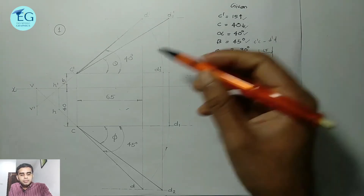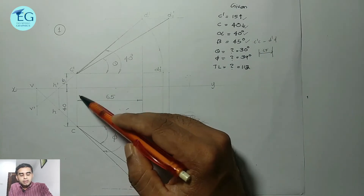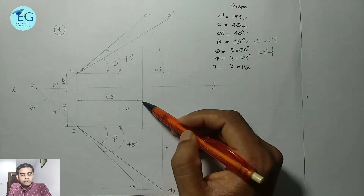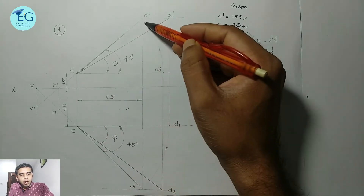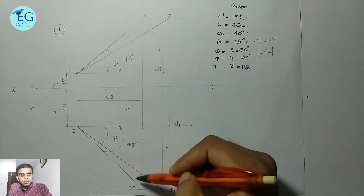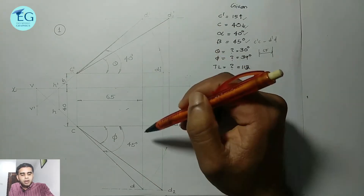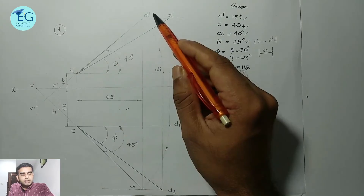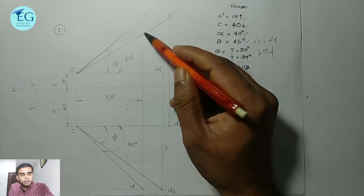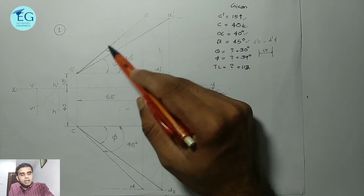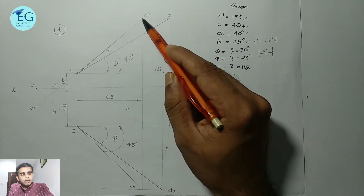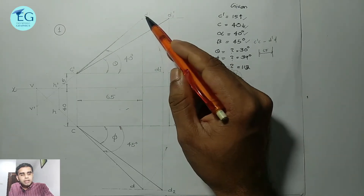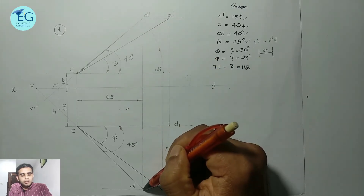That means the horizontal distance from c dash c along the XY line is 65 mm — the projectors are the same distance apart. The c dash d dash line and the cd top view line share this horizontal distance of 65 mm. D dash represents the horizontal distance endpoint.